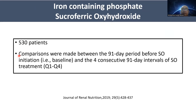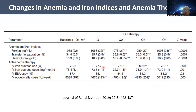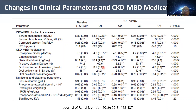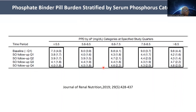Regarding recent trials of newly introduced phosphate binders: a study of sacroferric oxyhydroxide in 530 patients compared a 91-day period before drug initiation with four consecutive quarters after. Regardless of the baseline phosphate binder — sevelamer, calcium acetate, or lanthanum carbonate — use of sacroferric oxyhydroxide increased the percentage of patients with normal phosphorus, improved anemia parameters and iron indices, and markedly reduced the phosphate binder pill burden across all quarters.